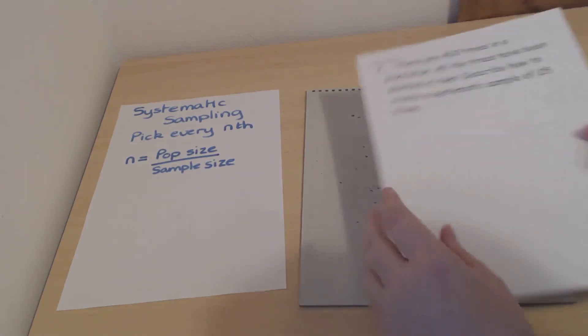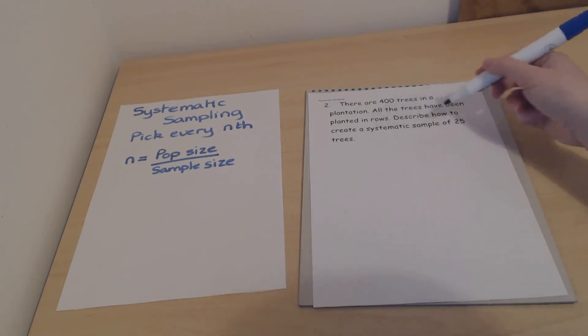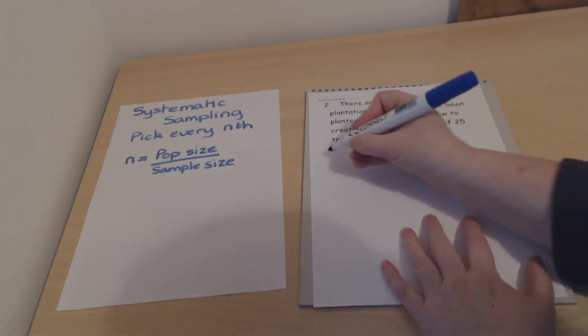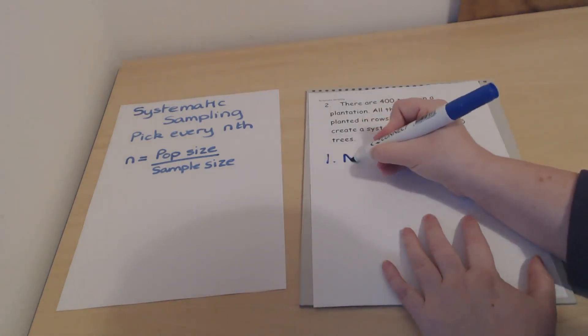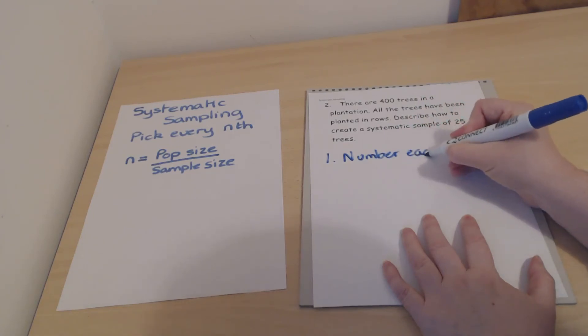Not really going to do the picking anymore, but just a couple of quick questions. There's 400 trees in a plantation, all planted in rows, so you could number them from 1 to 400. Describe how to create a systematic sample of 25 trees. Your first step would be to number each tree from 1 to 400.